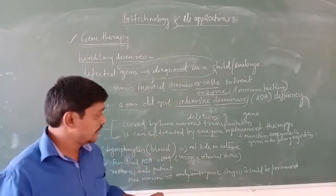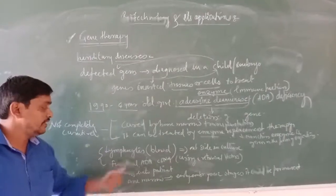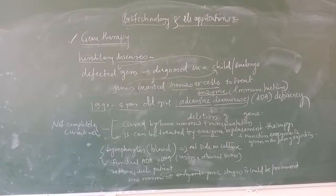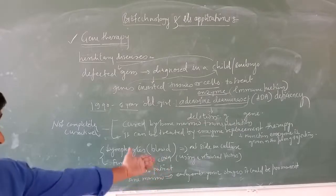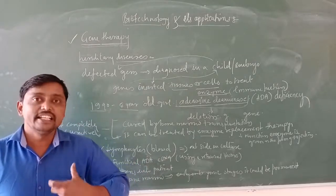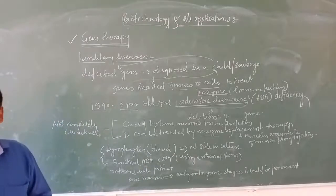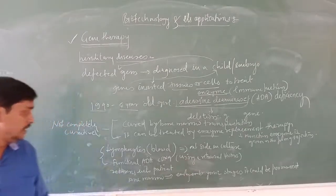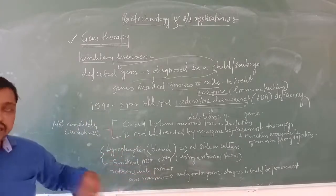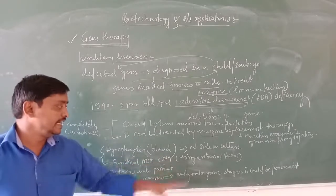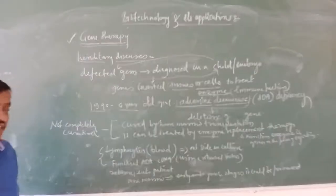To summarize the procedure: lymphocytes are removed from the patient and cultured in a culture medium. Functional ADA complementary DNA is added using a retroviral vector — a vector modified to reduce cancer-causing characteristics while carrying the desired gene. Both the lymphocytes and the functional ADA are then returned into the patient. This is the gene therapy approach.